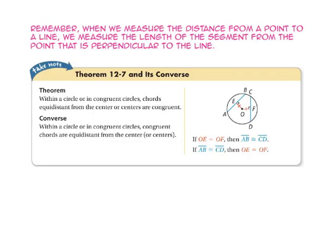Remember, when we measure the distance from a point to a line, we measure the length of the segment from the point that is perpendicular to that line. In theorem 12-7, it states that within a circle or in congruent circles, chords that are equidistant from the center or centers are congruent. Because segment OE is congruent to segment OF, segment BA is the same distance from point O that segment CD is. Since they are the same distance from the center, the chords are congruent. So, segment BA is congruent to segment CD.